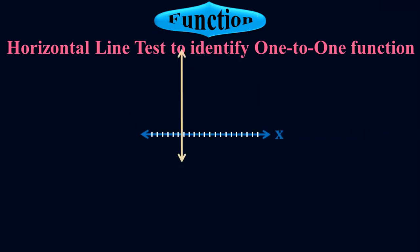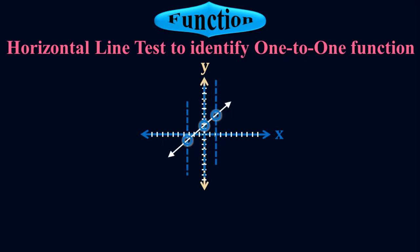If I have a graph of a function which is a straight line, I'm going to check whether it is a one-to-one function or not. The first step is to check whether it is a function at all. To identify that, I'm going to apply the vertical line test as we have done in the previous session. The vertical line touches the graph only once, therefore it is a perfect function.